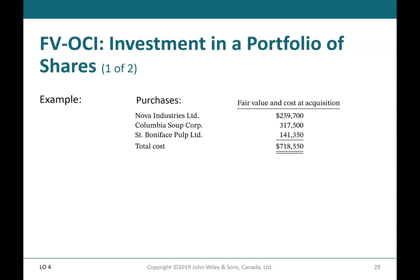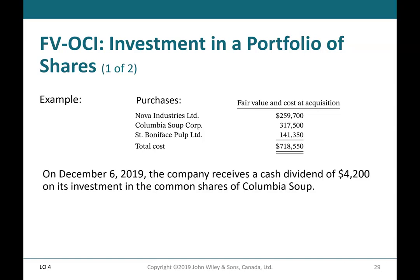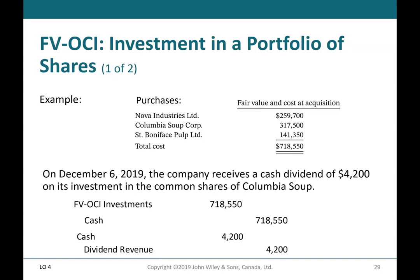Fair value through OCI — investment in a portfolio of shares, Part 1 of 2. A list of shares shows fair value and cost at acquisition. On December 6, 2019, the company receives a cash dividend of $4,200 on its investment in the common shares of Columbia Soup. To record the purchase: debit fair value through OCI investments $718,550; credit cash $718,550. To record the dividend: debit cash $4,200; credit dividend revenue $4,200.